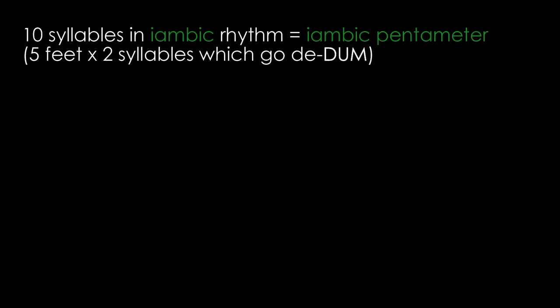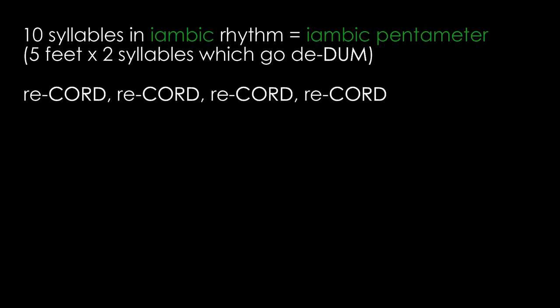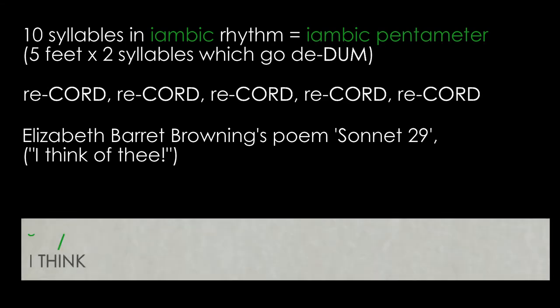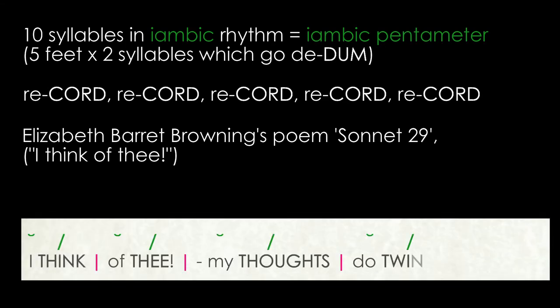So a line of ten syllables written in iambic rhythm is called iambic pentameter. There are five feet of two syllables each which go da-dum. You'll have come across this already in Shakespeare, as he wrote his plays and sonnets in this metre. These lines of verse have the same rhythm as if you were to say 'record, record, record, record, record.' Elizabeth Barrett Browning's poem 'I Think of Thee' has a base metre of iambic pentameter as it is a sonnet: 'I think of thee, my thoughts do twine and bud.'